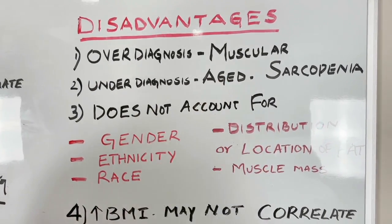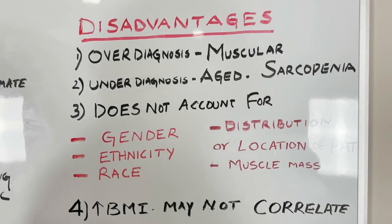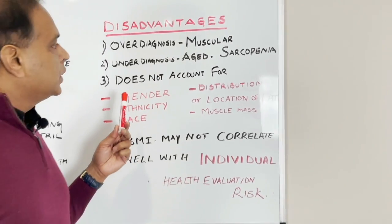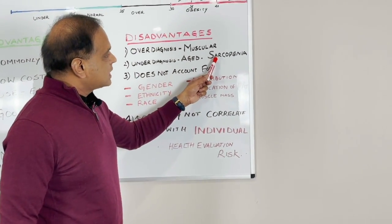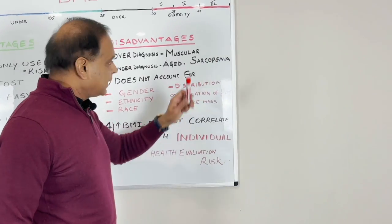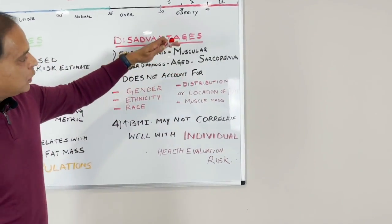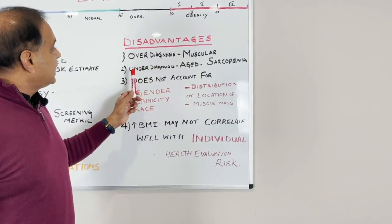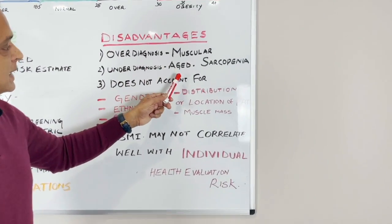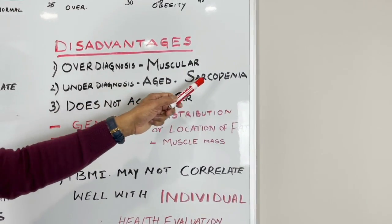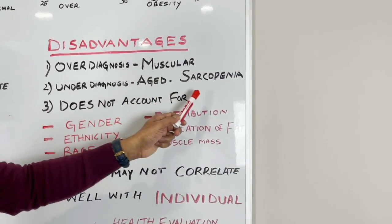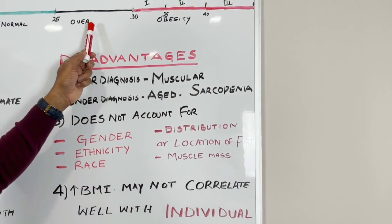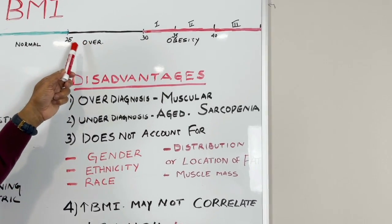At the same time, BMI also under-diagnoses people who are aged. As you age, you lose muscle — a condition called sarcopenia. When you lose muscle and gain relatively more fat, BMI may read as normal weight even though the person is actually under-diagnosed for overweight or even obesity, because it does not account for muscle mass loss.